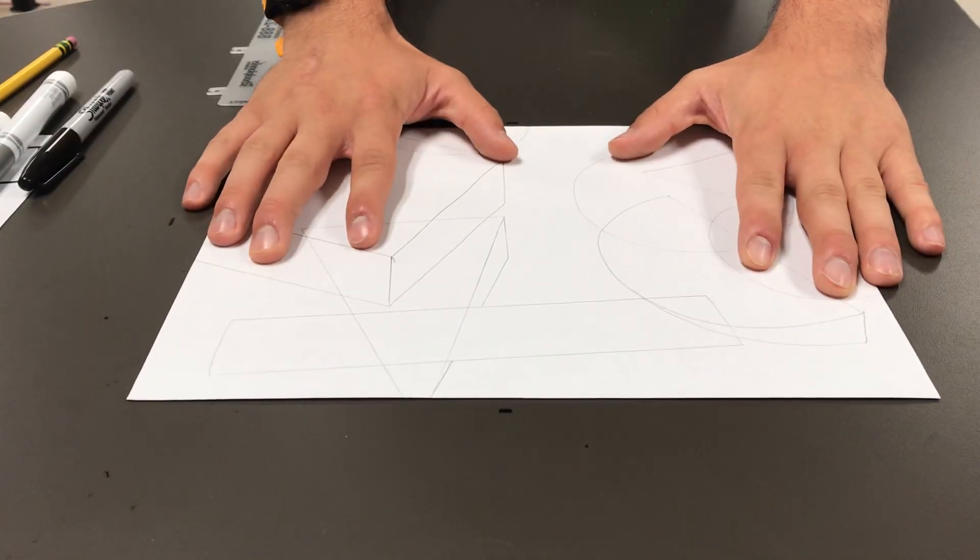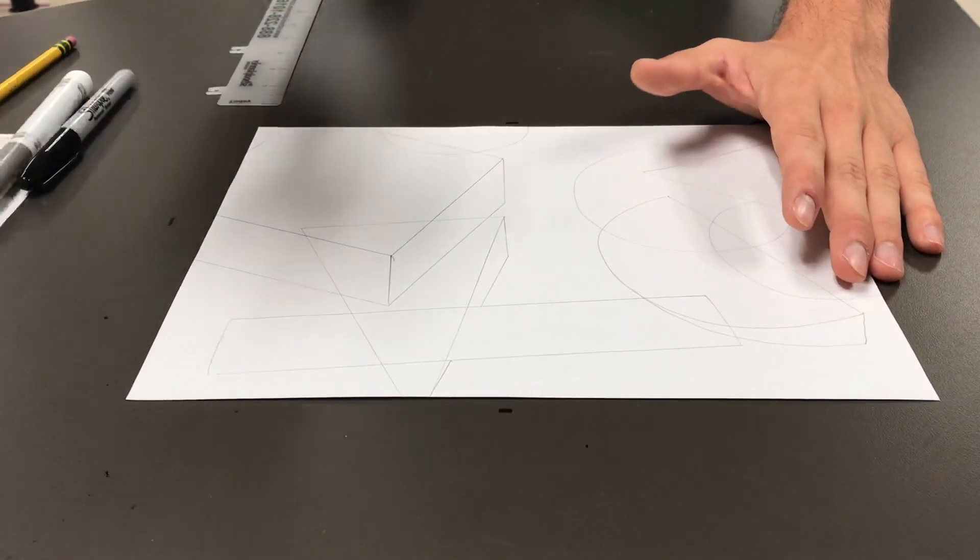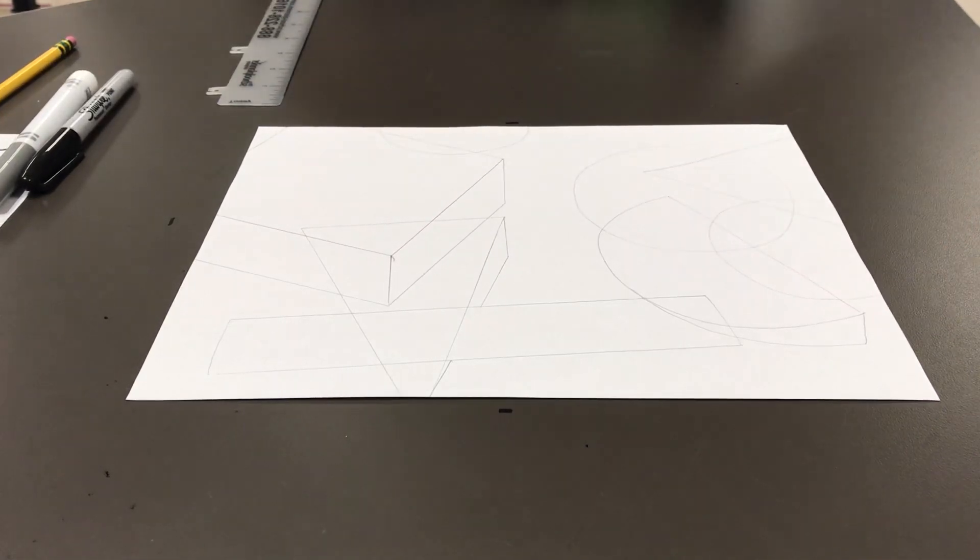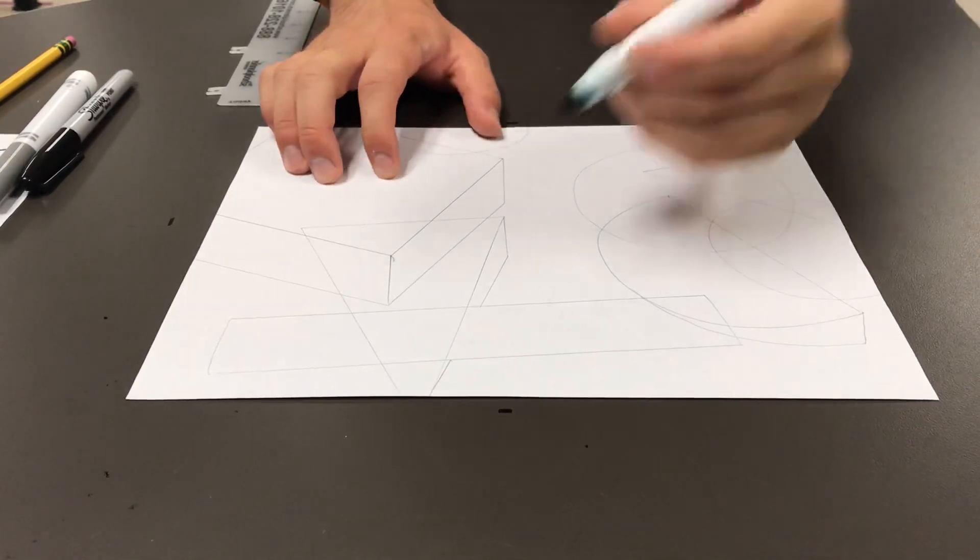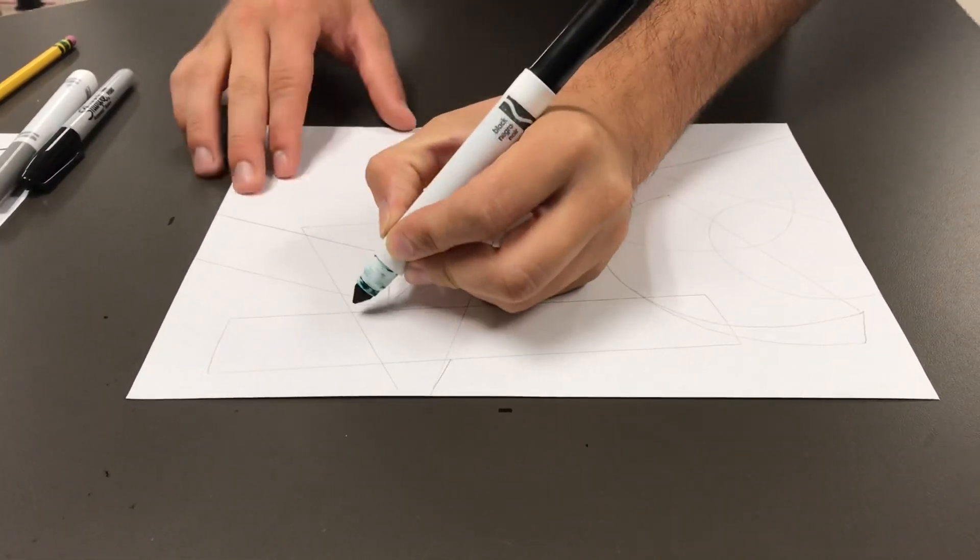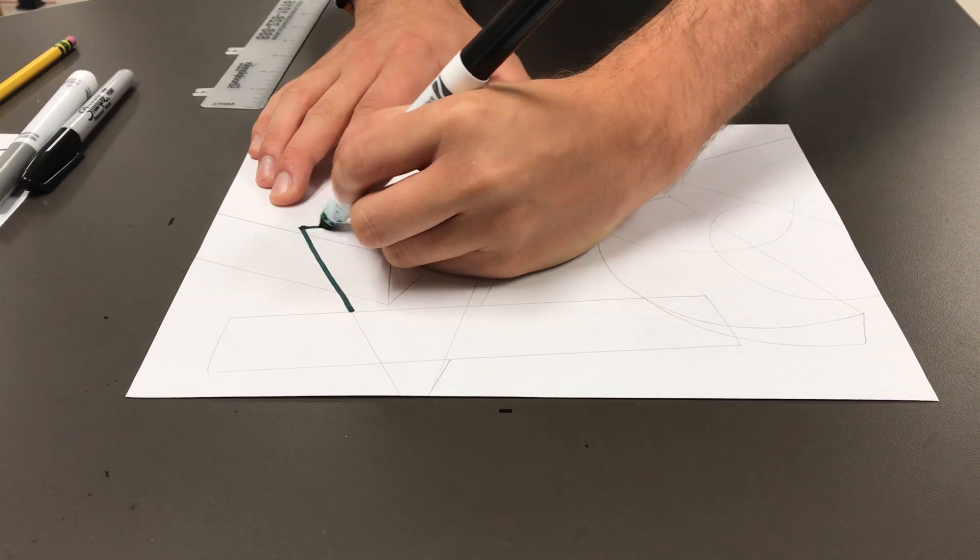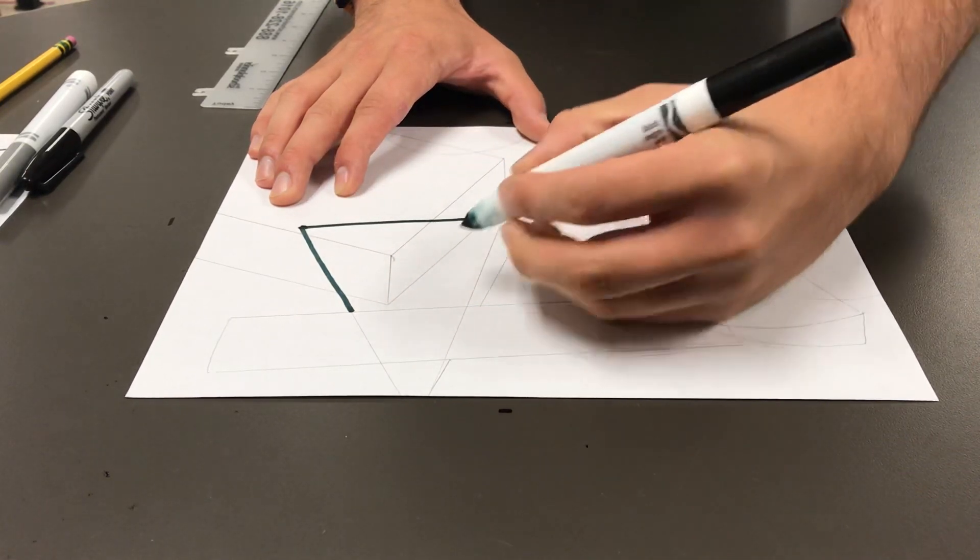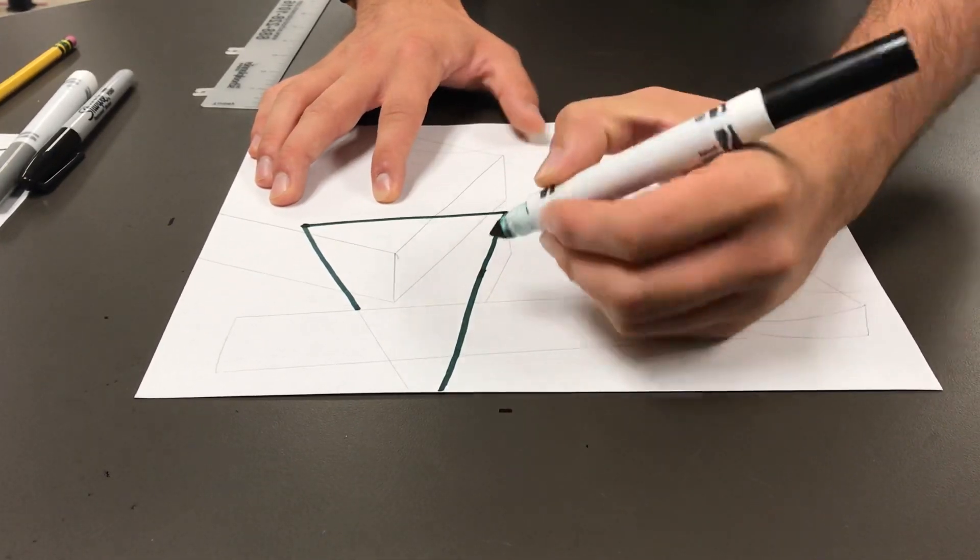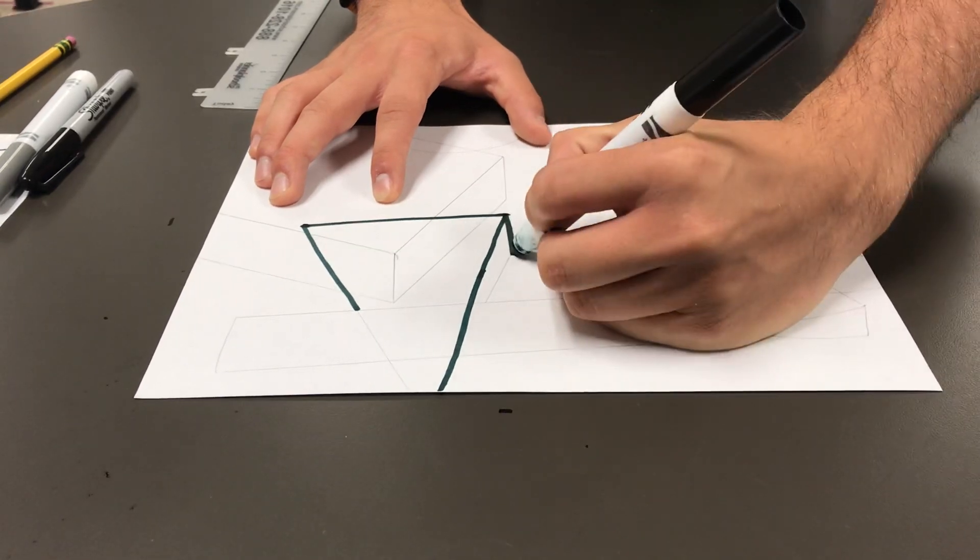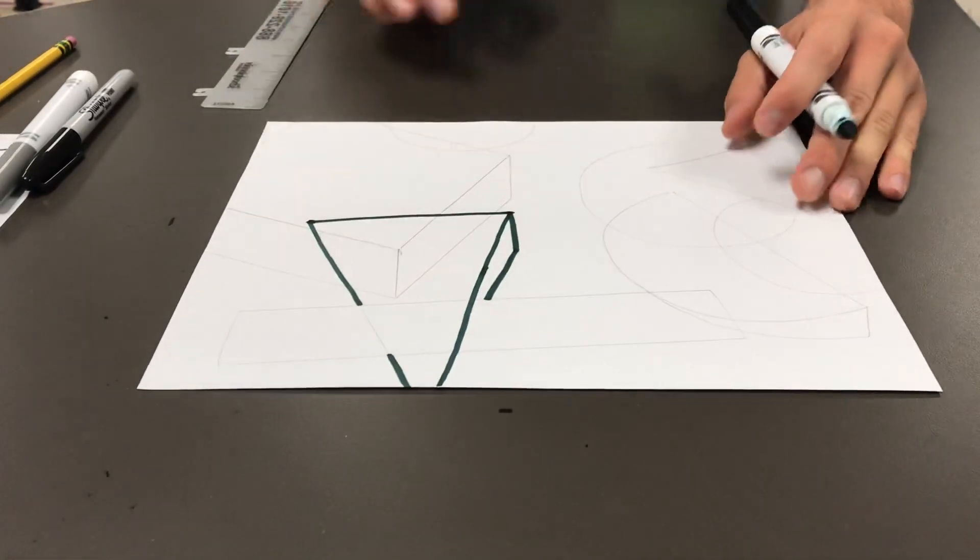Once you have your composition and you really like it, you're going to start to go in with your marker. And you're going to outline it. And sometimes where you made lines, you don't have to always add lines where you drew. As an example, maybe I want to leave parts of this triangle uncolored so I can erase it later.